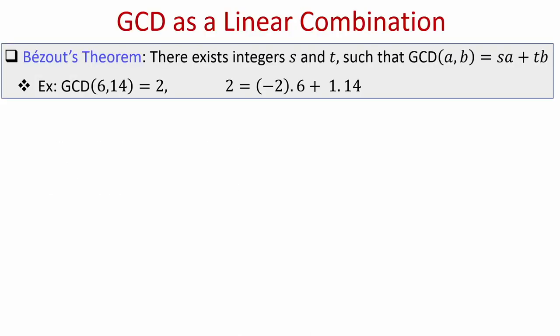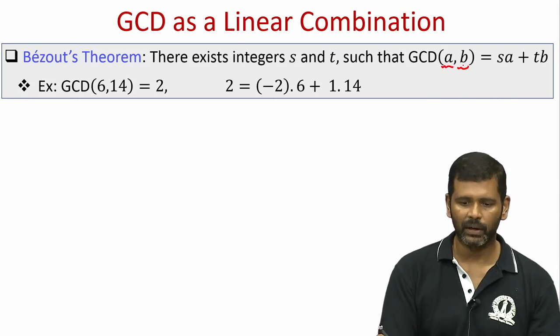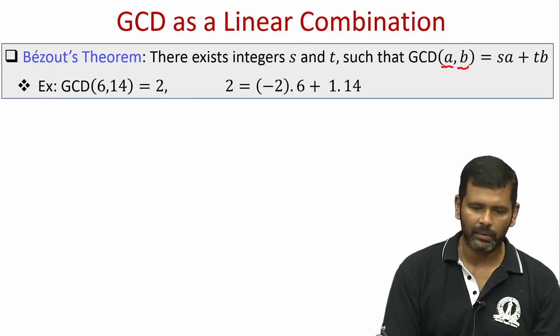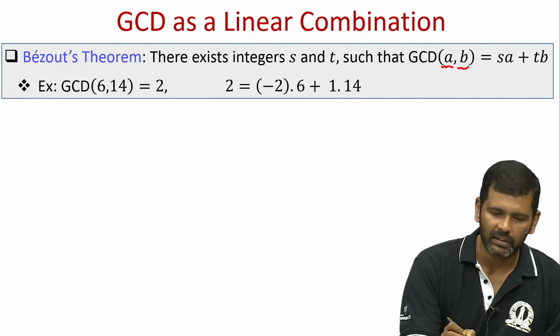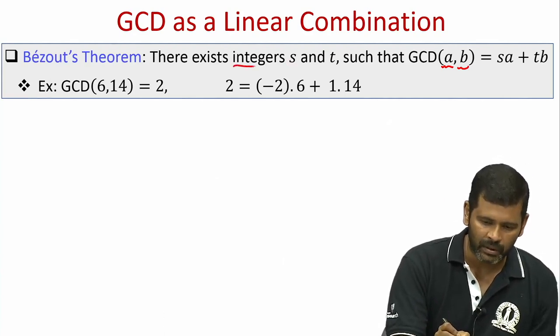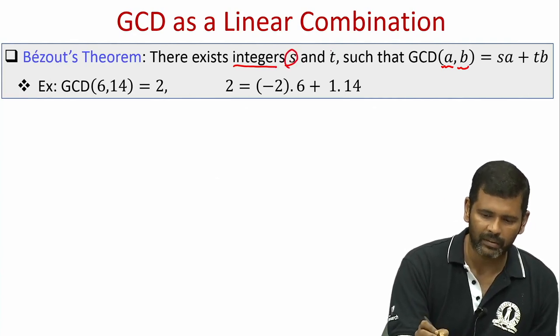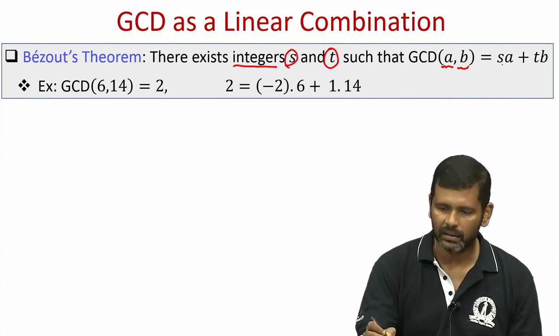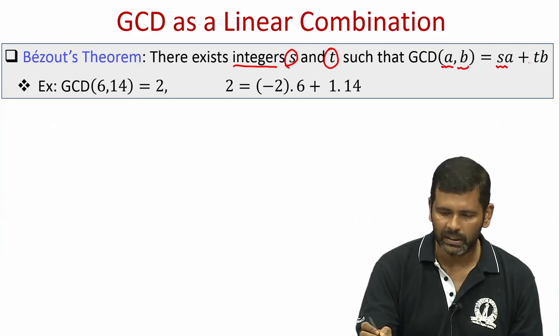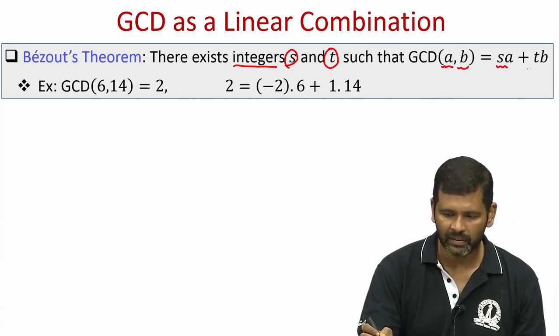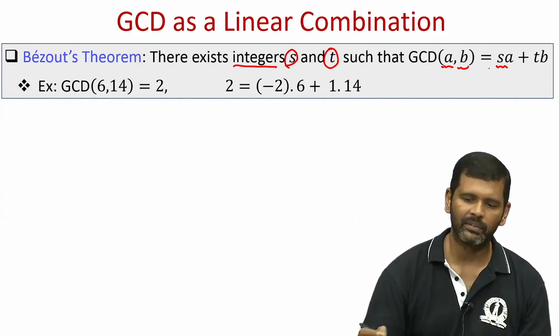Let us start with Bezout's theorem, which is a very interesting theorem. It says that you can always express the GCD of two numbers as a linear combination of the two numbers itself. More specifically, if you are given two values A and B and have found the GCD, then you can always find integer linear combiners S and T such that linearly combining A and B using S and T gives you the GCD.